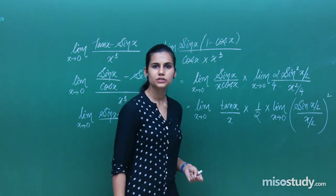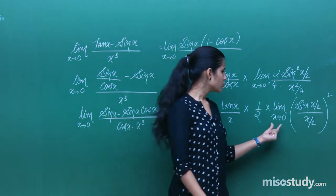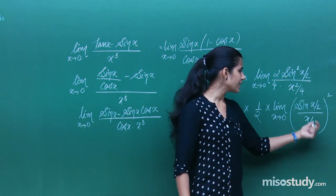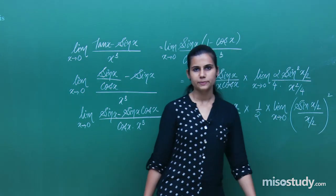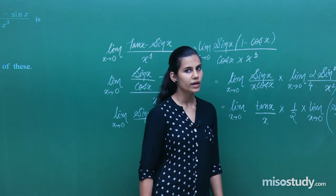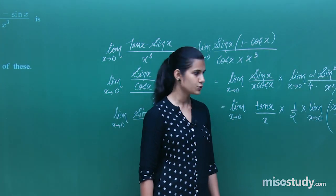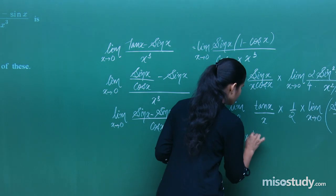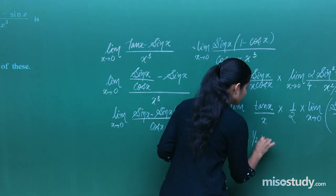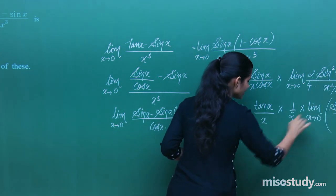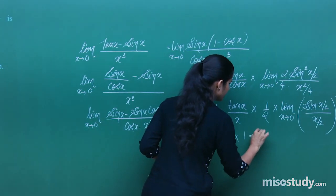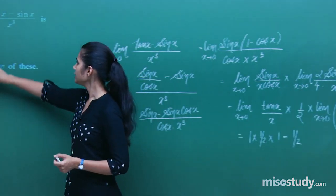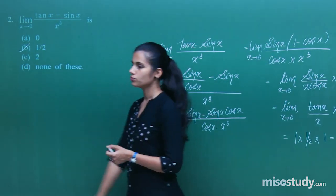Since square is a continuous function, the limit of [sin(x/2)/(x/2)]² is the square of the limit, which is 1² = 1. So the answer is 1 times 1/2 times 1 = 1/2.